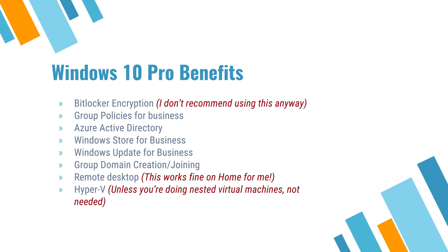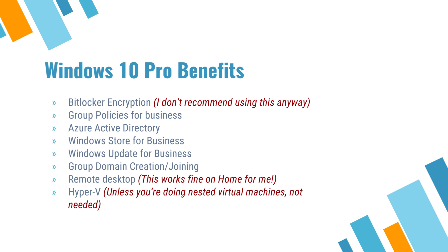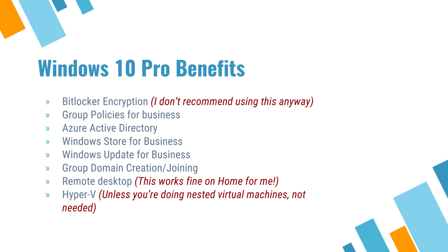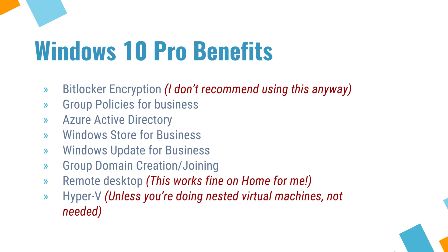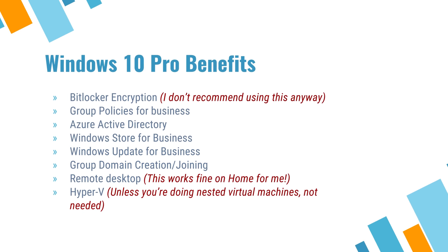According to Microsoft, Pro gives you the ability to create and join a domain — a specific work or business level network — use BitLocker encryption, which is not something I recommend using anyway, set up group policy management, use remote desktop, and use Hyper-V virtualization for running virtual machines with better access to your CPU.